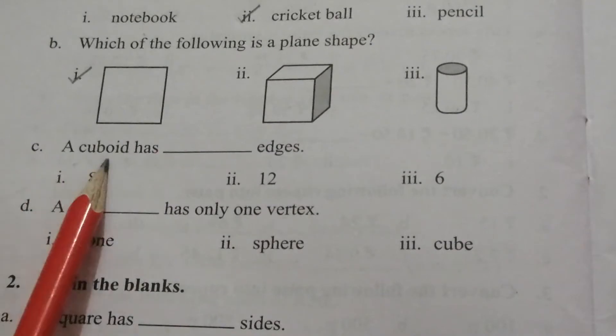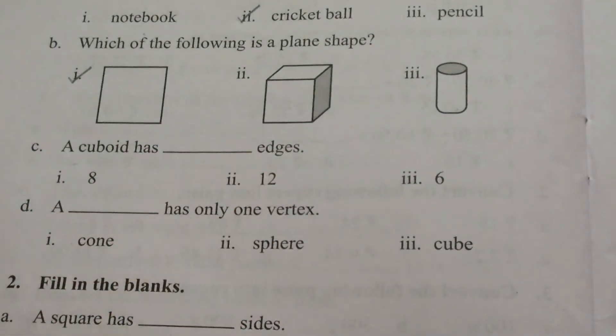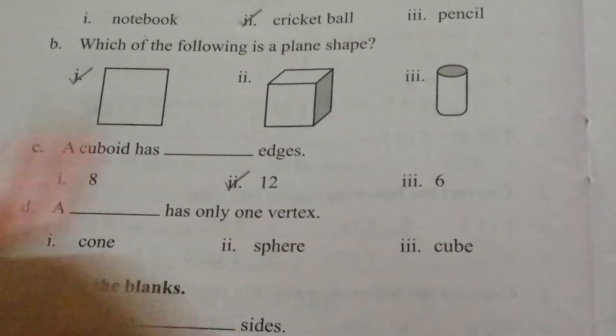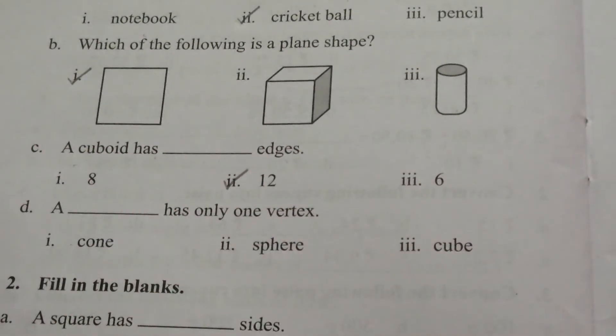C. A cuboid has blank edges. The answer is 12. Cuboid has 12 edges. Likewise, cube also has 12 edges.